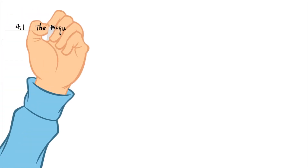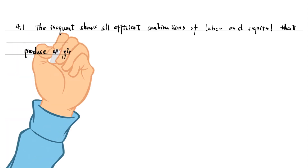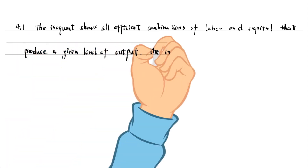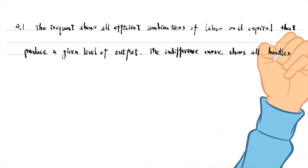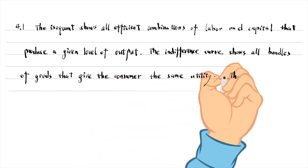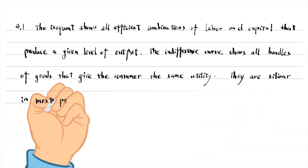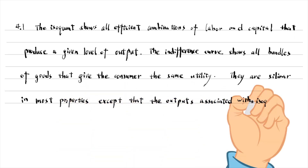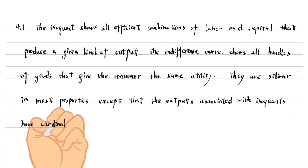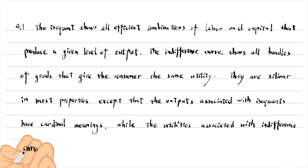The isoquant shows all efficient combinations of labour and capital that produce a given level of output. The indifference curve shows all combinations or bundles of goods that give the consumer the same utility. The isoquant holds the quantity of output constant; the indifference curve holds the utility constant. They are similar in most properties, except that the outputs associated with isoquants have cardinal meanings, while the utilities associated with indifference curves have only ordinal properties.